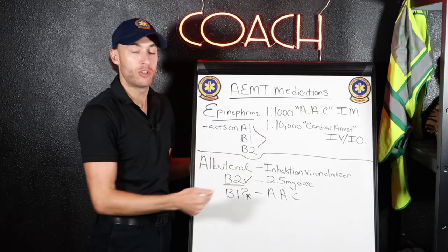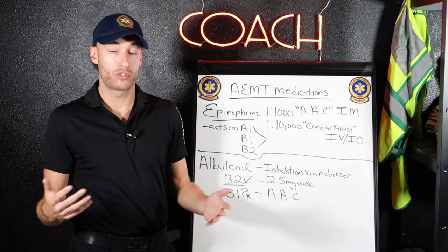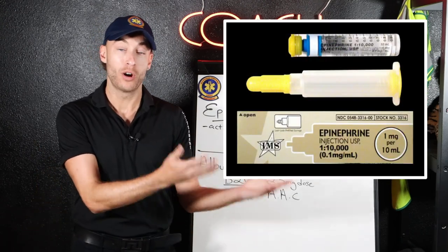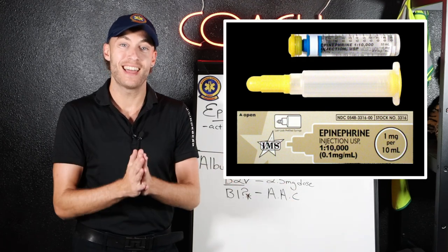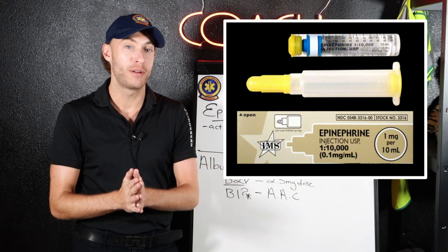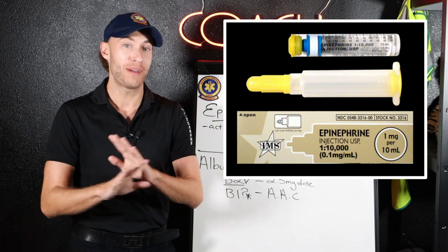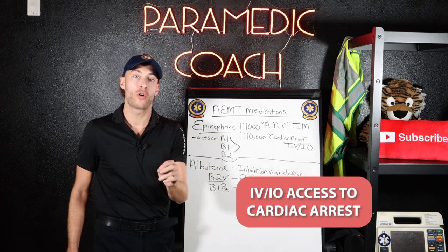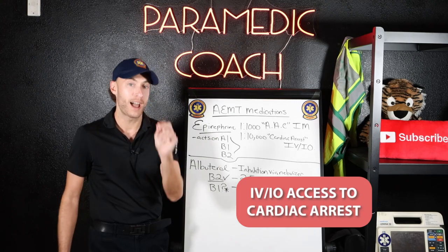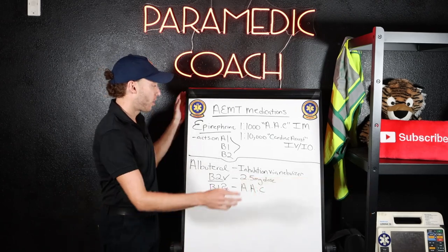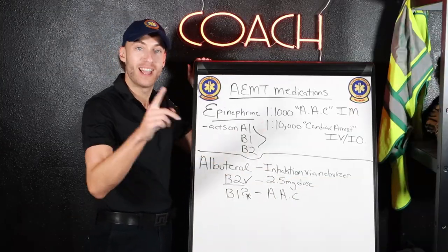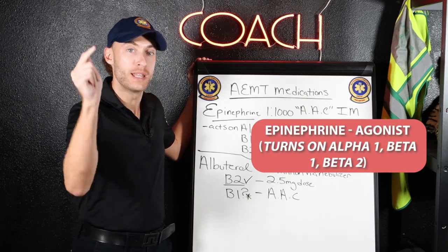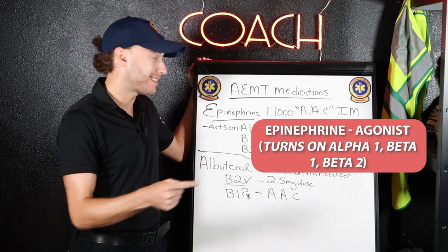1:10,000 is for cardiac arrest — that's your box epi. It comes in a box, and that epinephrine is not going in anyone's arm. That's way too much fluid. That is IV/IO access for cardiac arrest as part of your cardiac arrest algorithm. So what does epinephrine act on? It's an agonist — it turns on the alpha-1, the beta-1, and the beta-2 receptor. That's epinephrine.